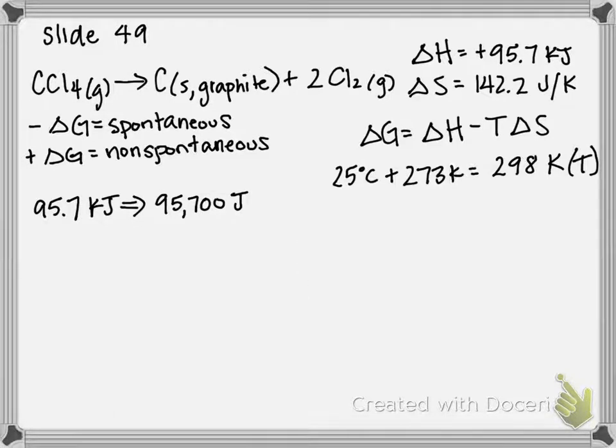So now we can plug everything into this equation. Our delta G equals delta H minus T times delta S. Delta G is what we're looking for. We're trying to figure out if our sign is positive or negative, if it's spontaneous or non-spontaneous.